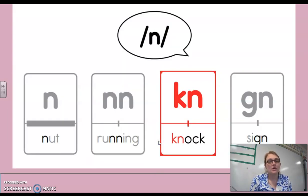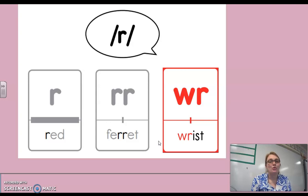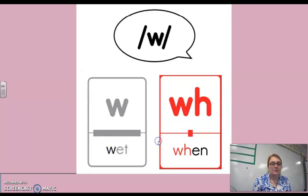Okay, first for some review. Sometimes when we hear the N sound like in knock, it will be spelled with a K-N. Next, when we hear wrist, that R sound is spelled with a W-R. And when we hear the word when, that W sound in this word is spelled with a W-H.